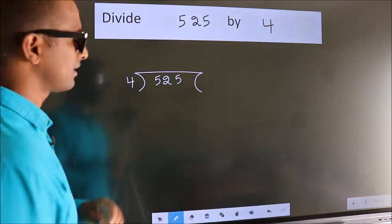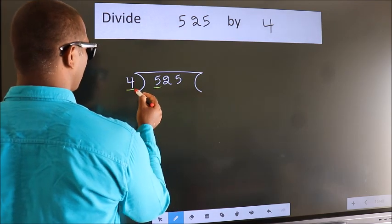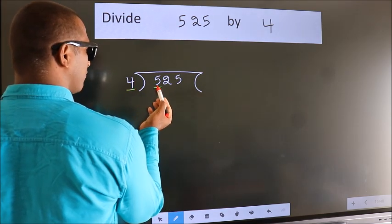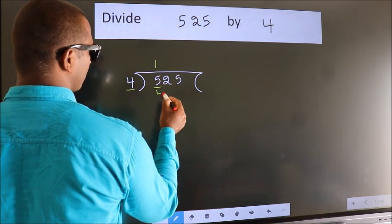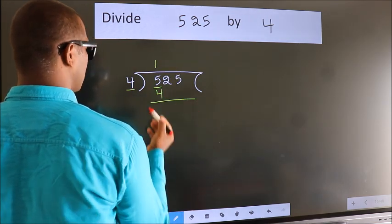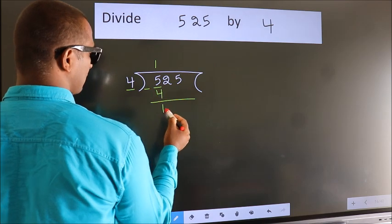Next, here we have 5, here 4. A number close to 5 in the 4 table is 4. Once 4. Now, we should subtract. We get 1.